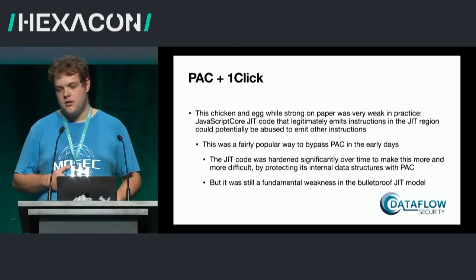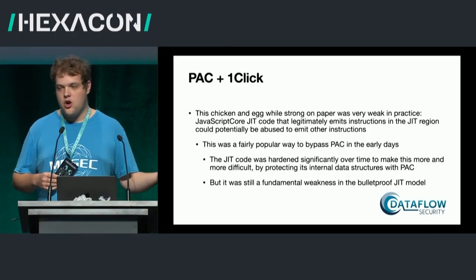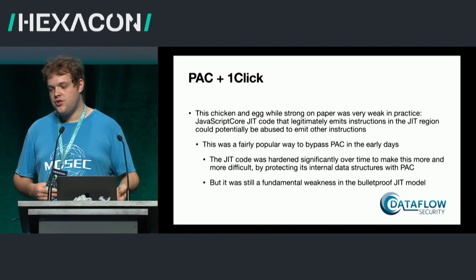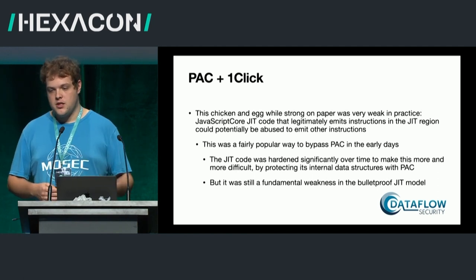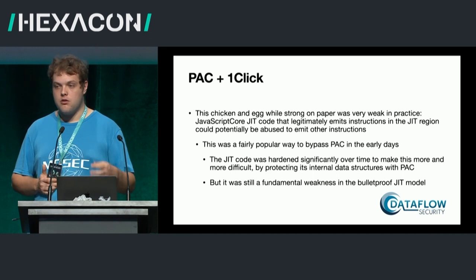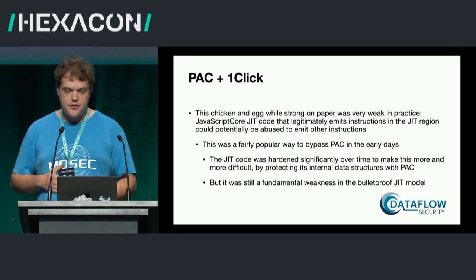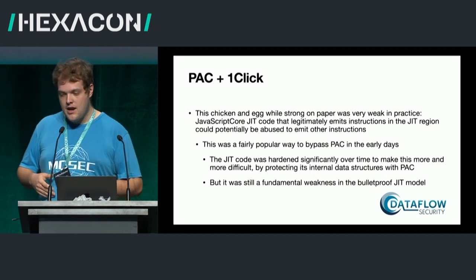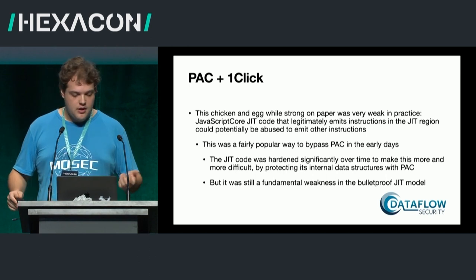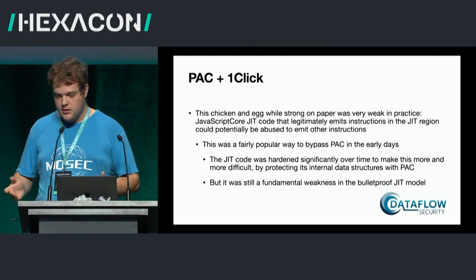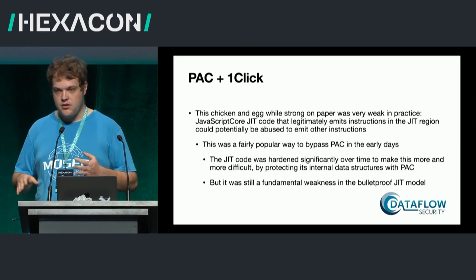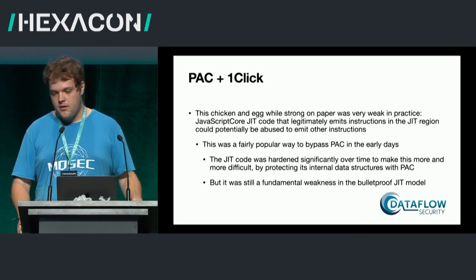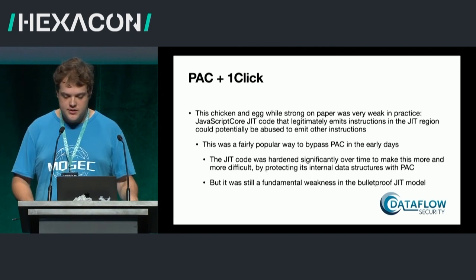However, there's actual code in the JavaScript engine that has to legitimately emit instructions. As such, initially this was very weak — there were many ways of tricking the JIT engine into emitting controlled instructions. This was apparently a very popular strategy early on. Over time the JIT has been improved, and lots of data structures involved in determining which opcodes emit have been PAC'd themselves. This was still a significant weakness in the Bulletproof JIT model.